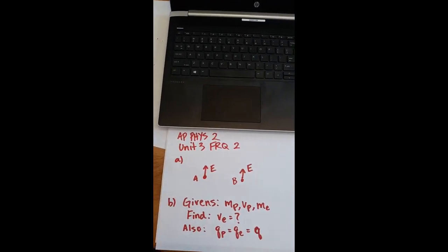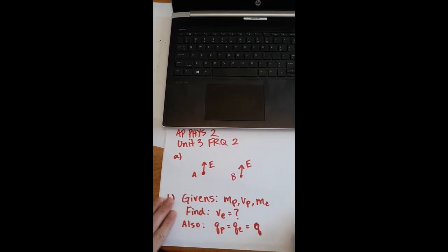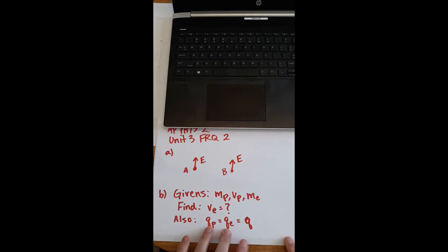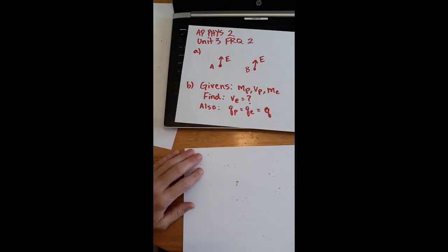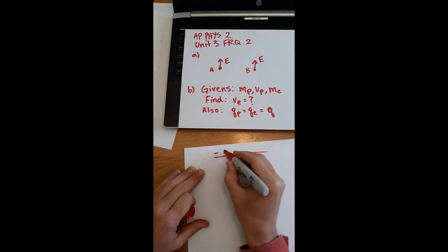So here's what I have on my sheet for Part B. Those are my givens. I need to find VE. And I want to remind you that the charge on a proton and the charge on an electron are the same amount. It's 1.6 times 10 to the negative 19 coulombs. And so I'm just going to say for either one of these the charge is Q. Alright, keeping that in mind, let's move forward to getting this velocity for the electron.